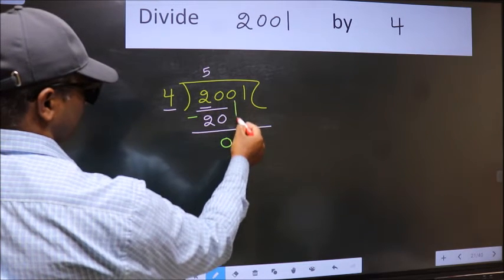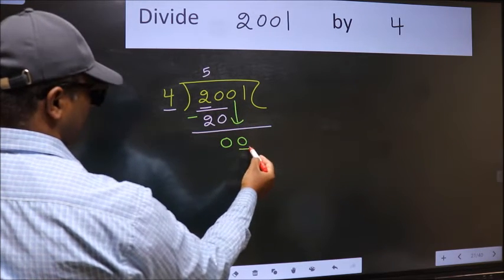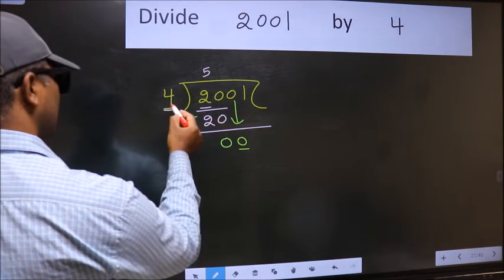After this, bring down the beside number. So 0 down. Now here we have 0 and here 4.